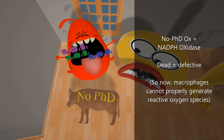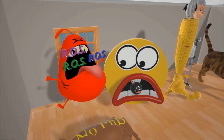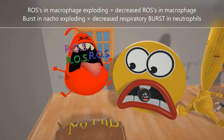NADPH oxidase is used by macrophages to generate reactive oxygen species. Reactive oxygen species is actually a really good thing inside macrophages because it helps them kill pathogens. Once there's a defect in NADPH oxidase, such as in chronic granulomatous disease, this leads to an inability of macrophages to properly destroy certain pathogens. Here we have the red macrophage, and these ROSs are being exploded to help us remember the decrease in reactive oxygen species.